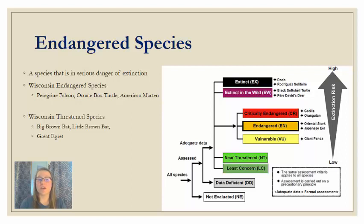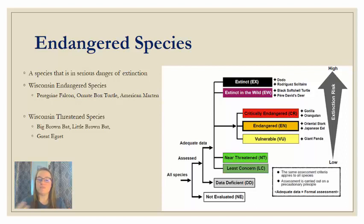Endangered species are any species in danger of extinction — meaning no individuals are left living anywhere in the world. This flowchart helps evaluate how we determine the threat level for endangered species, and it is similar to what the IUCN uses to create what's called the Red List, which we'll discuss in a moment.